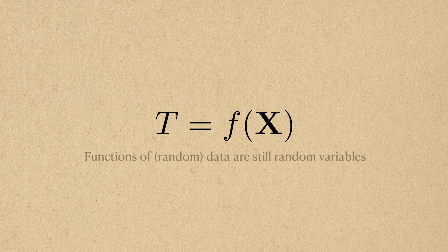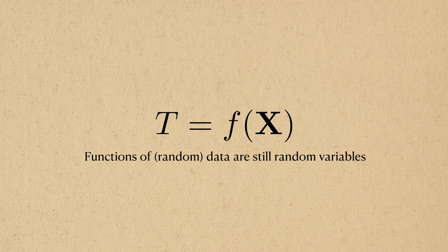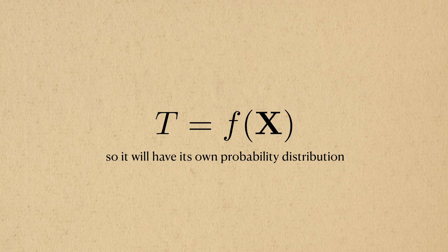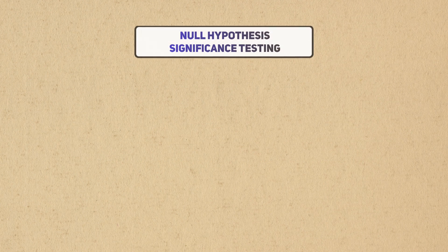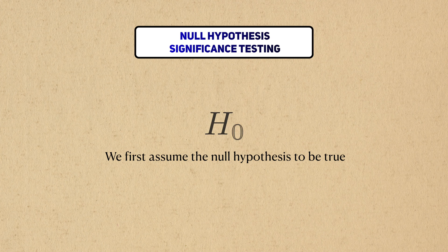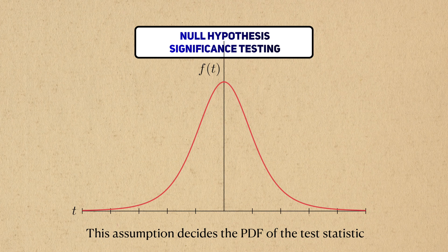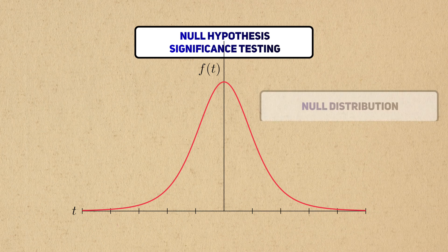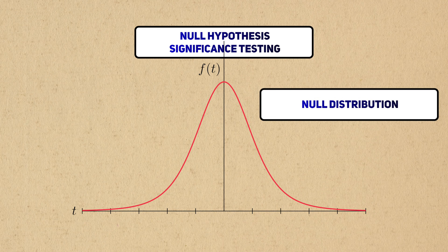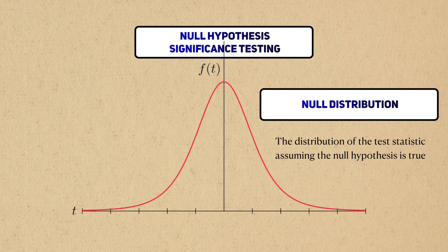If you can recall from one of the last training videos, this test statistic is also a random variable and will therefore also have a probability distribution function. Under the NHST, we first assume that the null hypothesis is true, and this assumption will decide the probability distribution for the test statistic. Together, we call it the null distribution, the distribution of the test statistic under the null hypothesis.